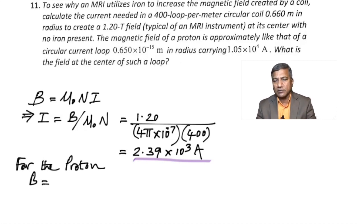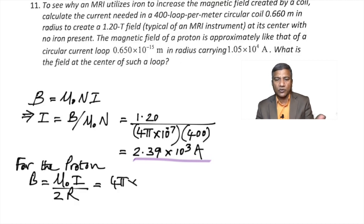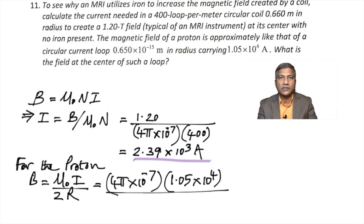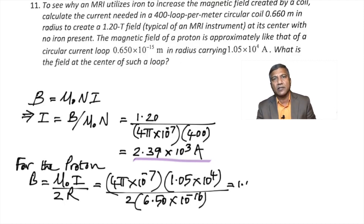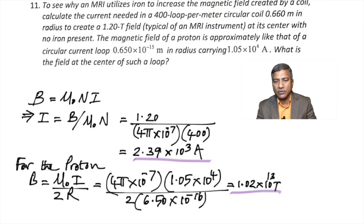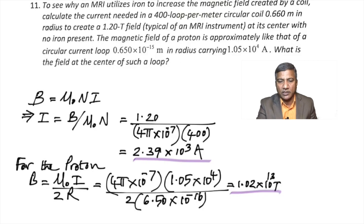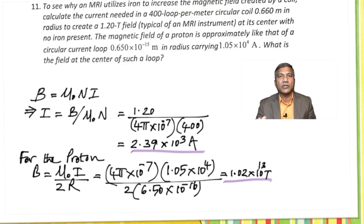Part B: for a proton, the magnetic field is approximately like that of a circular current loop with a given radius and current. Using the same formula with the new values of current and radius for the proton, we get the magnetic field due to the proton as 1.02 × 10¹³ Tesla — an extremely strong field because the proton is circulating at a very small radius at high speed.